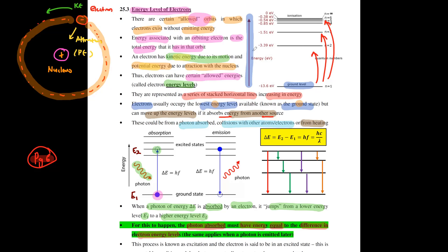If the difference between E2 and E1 is, say, 3.6 eV, then in order for your electron to jump from E1 to E2, the photon energy it absorbs must be exactly equal to 3.6 eV. It cannot be any more, it cannot be any less. If it's more or less than that, the photon just won't be absorbed — it will only be absorbed if the photon energy equals the difference in electron energy levels.